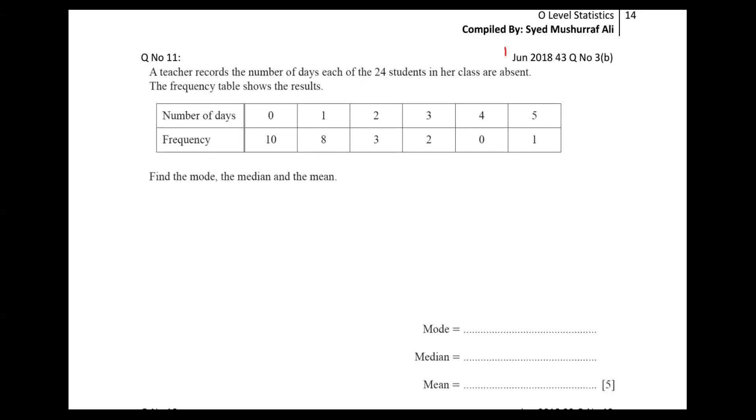Bismillahirrahmanirrahim, this is a question June 2018 4Q, we're in question number 3b and the topic is statistics. We have to find mode, median, and mean. Mode is very simple - it's the maximum repeating number.